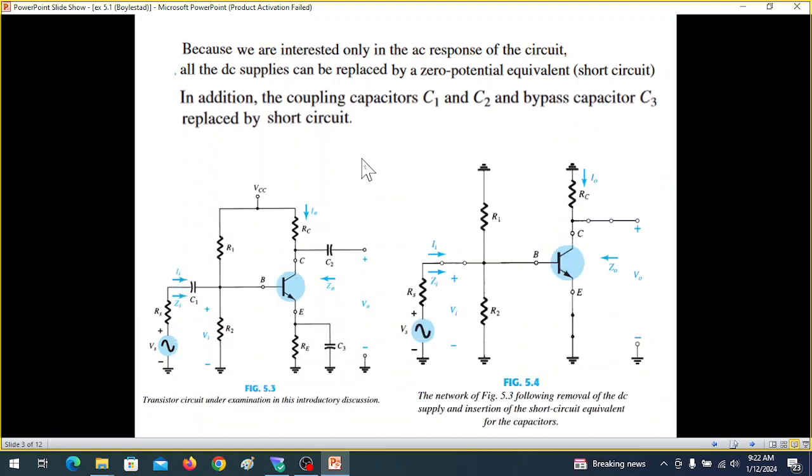The second step we do is in addition, the coupling capacitors C1, C2 and bypass capacitors C3 are replaced by short circuit. Now these capacitors are called coupling. This is coupling the input to the circuit. Similarly, the output of the circuit will be coupled to the next stage if there is any. And this capacitor is to bypass the resistor.